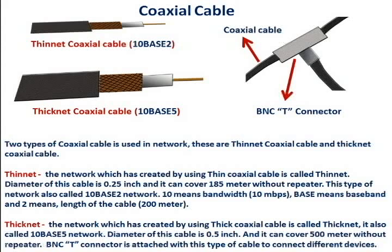Thinnet: the network which is created by using thin coaxial cable is called thinnet. The diameter of this cable is 0.25 inch, and it can cover 185 meters without a repeater. This type of network is also called a 10Base2 network. '10' means bandwidth of 10 Mbps, 'base' means baseband, and '2' means the length of the cable — 200 meters.